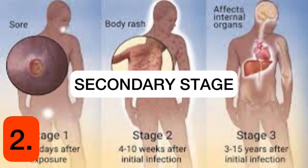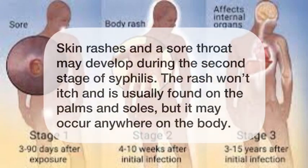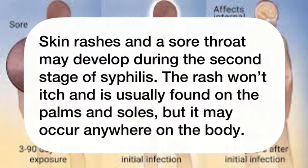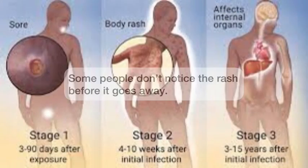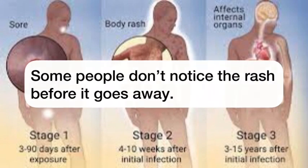During the secondary stage, skin rashes and a sore throat may develop. The rash will itch and is usually found on the palms and soles, but it may occur anywhere on the body. Some people don't notice the rash before it goes away.